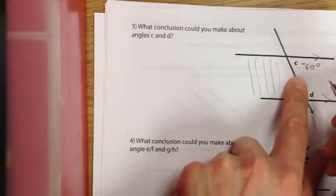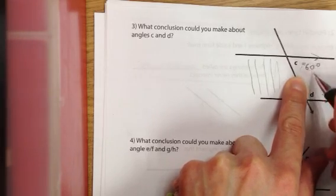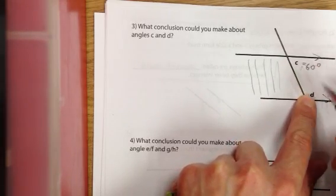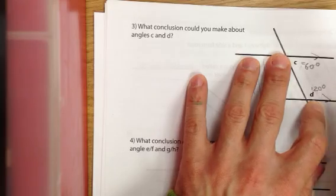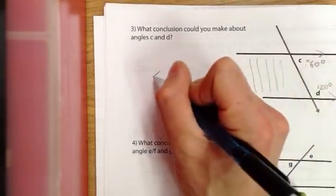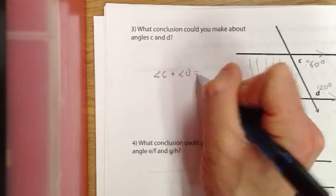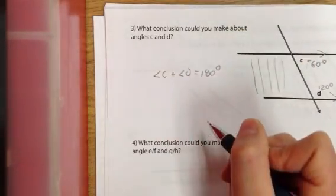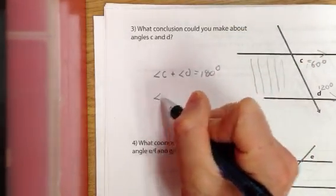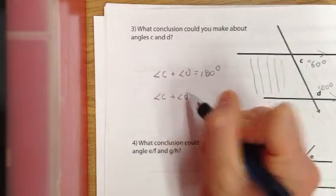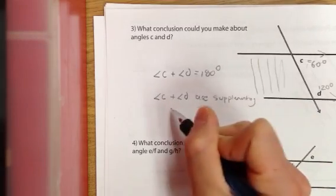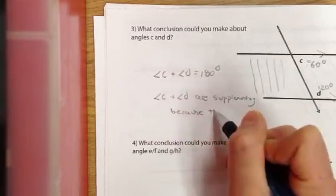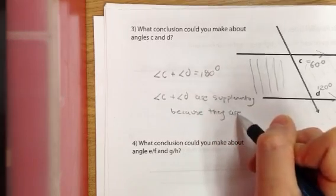the rule we learned from the notes was that angles that are both inside of the highways are what we call interior angles, and they add to 180 or are supplementary. So, this is 120 degrees. So, the rule here is that angle C and angle D equal 180 degrees, and what you can conclude is that angle C and angle D are supplementary because they are interior angles.